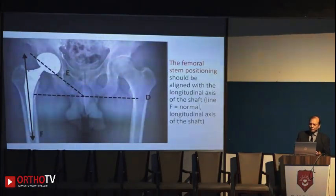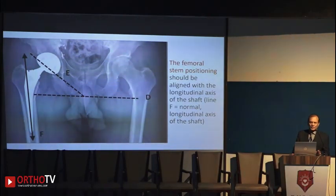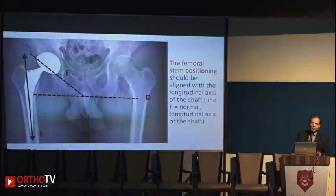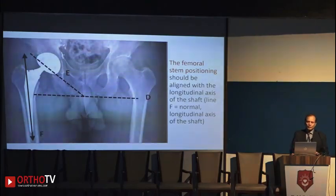Femoral alignment is also very important. You observe how the stem is placed in the distal femur; a vertical line drawn from the piriformis fossa along the long axis of the femur gives you an idea about alignment of the femoral stem. Another important landmark is the tip of the greater trochanter — the center of the femoral head relative to the trochanter tip indicates varus or valgus placement. If the femoral head center goes above the trochanter tip line, it is valgus; if it goes below, it is varus placement.